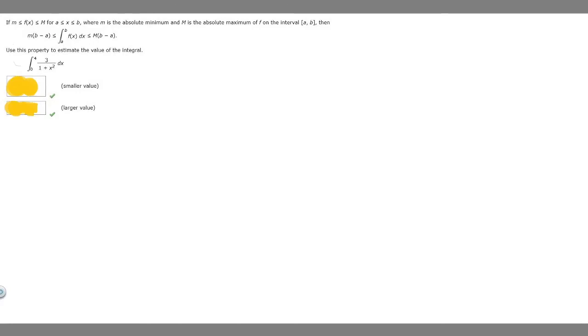In this problem we're told that if m is less than or equal to f(x), which is less than or equal to capital M, for a which is less than or equal to x, which is less than or equal to b, where m is the absolute minimum and capital M is the absolute maximum of f on the interval from a to b, then we have this formula right here and we're going to use this to solve.